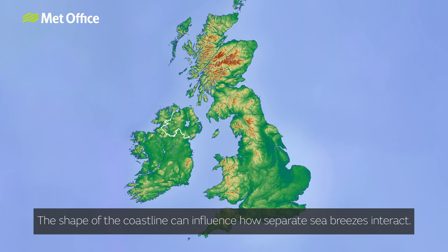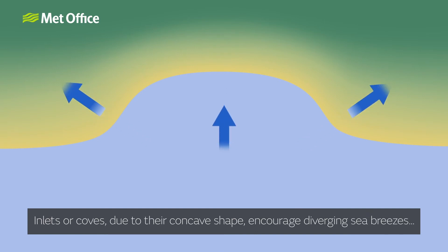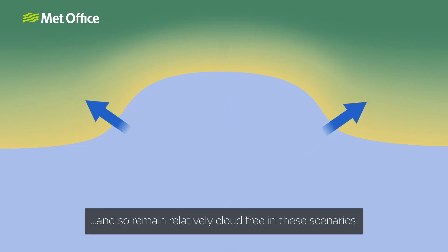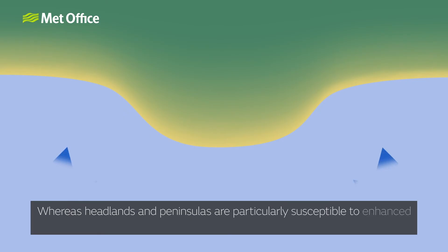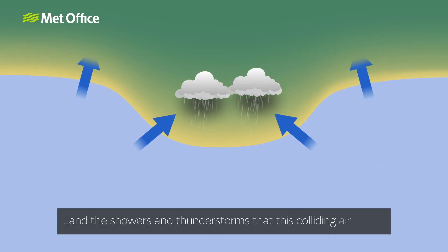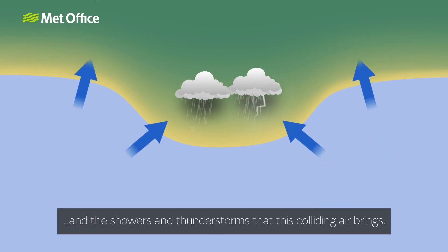The shape of the coastline can influence how separate sea breezes interact. Inlets or coves, due to their concave shape, encourage diverging sea breezes and so remain relatively cloud-free in these scenarios. Whereas headlands and peninsulas are particularly susceptible to enhanced convergence of sea breezes and the showers and thunderstorms that this colliding air brings.